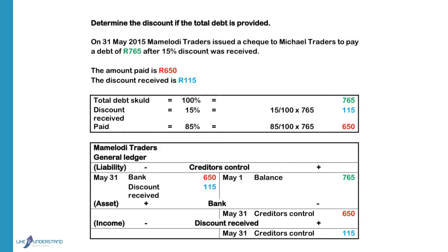On 31 May, Mamalori Traders issued a cheque to pay a debt of 765 Rand after a 15% discount was allowed. So the total debt equals 100% and they give us the total debt as 765 Rand. Discount is 15%, so the amount paid is 85% of the total debt. To calculate the discount: 15 at the top divided by 100 at the bottom, which gives us 115 Rand.